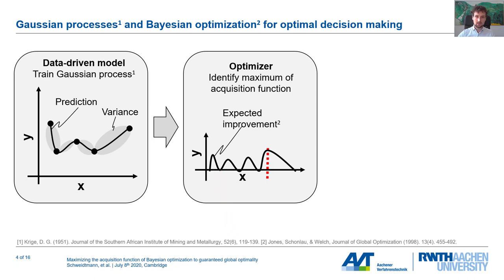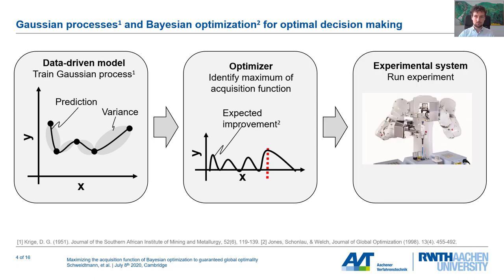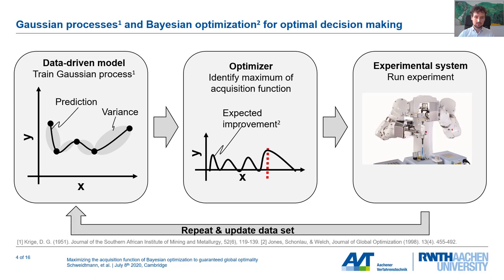We can combine this expected improvement with an experimental system to run experiments automatically. By doing that, we can repeat this process, update our data, and automatically optimize chemical reactions. The key problem here is that we need to find the optimum of this expected improvement acquisition function. As you can see, this function has multiple local optima, and it is very important that you find the global optimum, because that gives us the most informative and most promising chemical experiment.